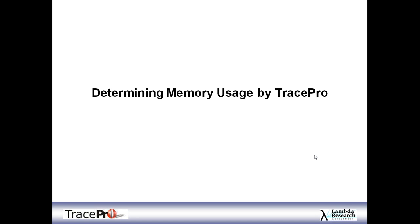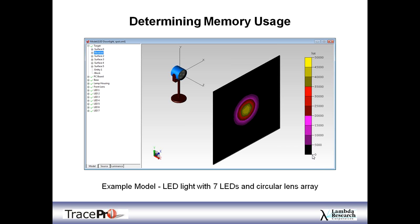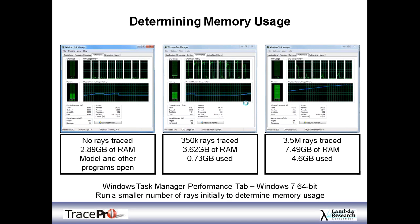Now let's look at determining memory usage by TracePro. It's always a good idea to have a feel for how much memory the ray trace will use, because running out of RAM can cause strange performance, crashes, or the computer locking up. For this example, I'm using a little LED light with seven LEDs and a circular lens array — you'll see this model a few more times today. I opened up the Windows Task Manager, Performance tab — this is Windows 7 64-bit. Before doing anything, I'd already used almost 2.9 GB of RAM from background programs including Skype and the TracePro model itself.